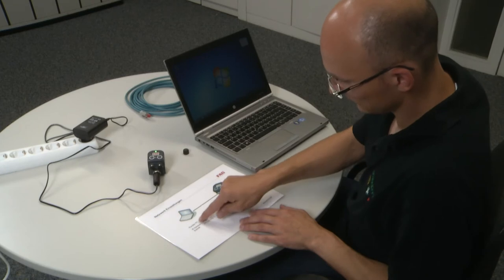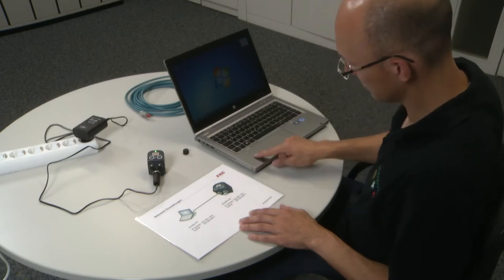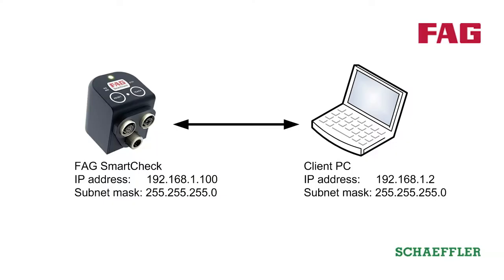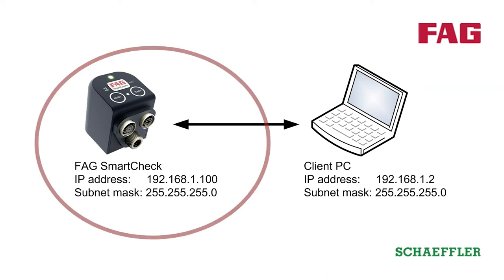First, we will set up the IP address of the PC. This picture shows the network configuration of the FAG SmartCheck and the PC. The standard IP address of the FAG SmartCheck is 192.168.1.100.